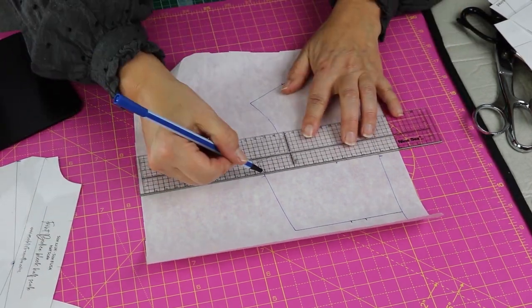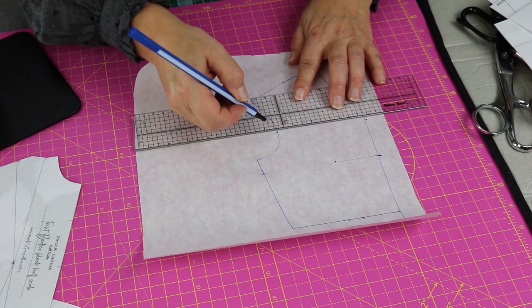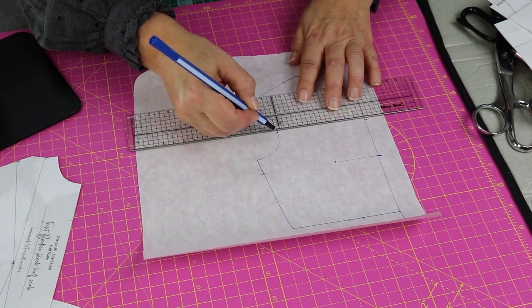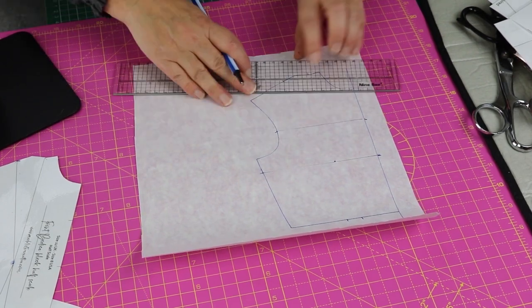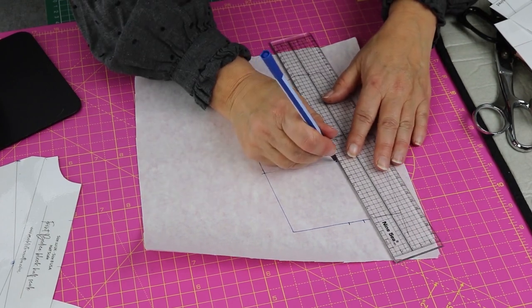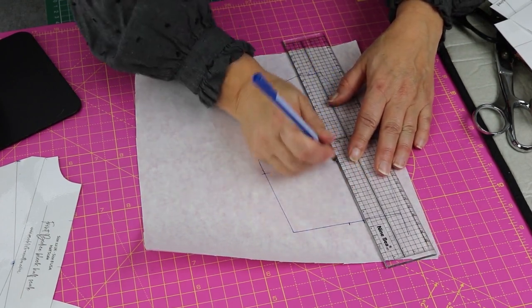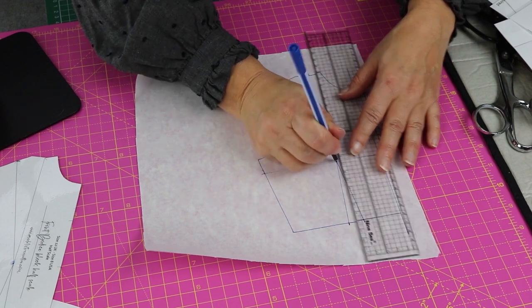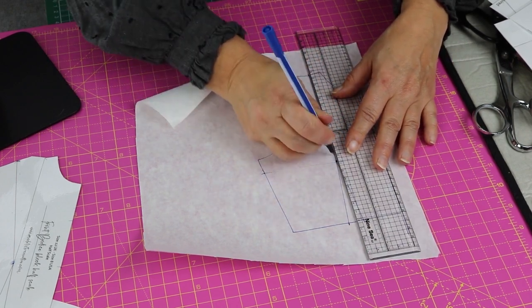So marking the bust level, the chest level, and the legs of each of the darts. So our waist dart and our shoulder dart.